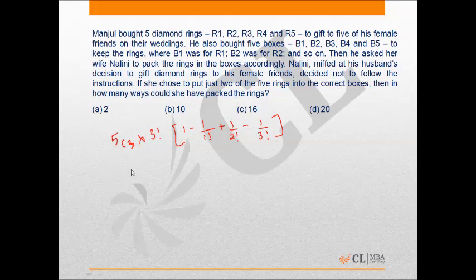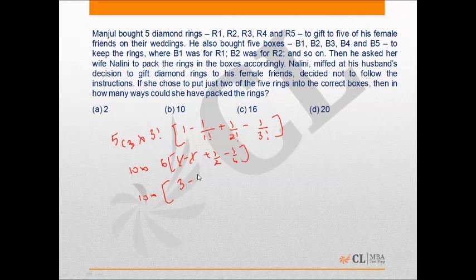So 5C3 is 10, and now this is 6 into (1 minus 1 plus 1/2 minus 1/6). That gives 10 into (half into 6 is 3, minus 6 into 1/6 is 1), so that is 10 into 2, which is 20. Hence the answer is D, 20 ways.